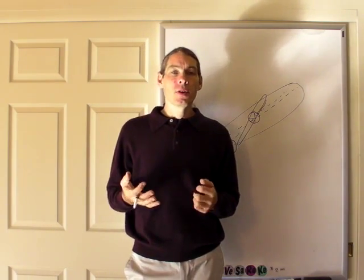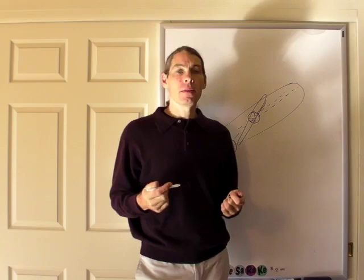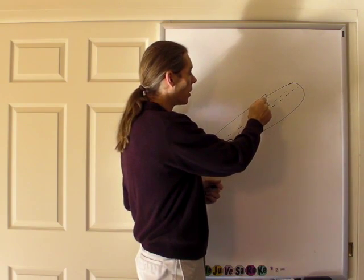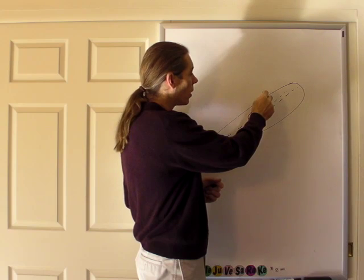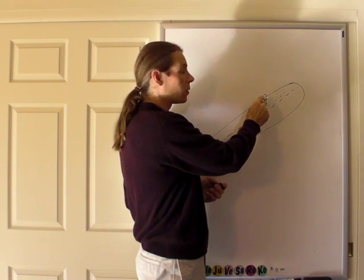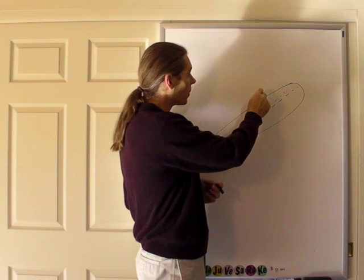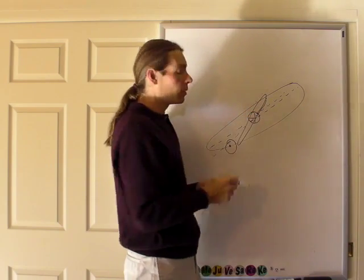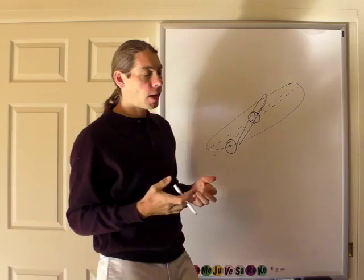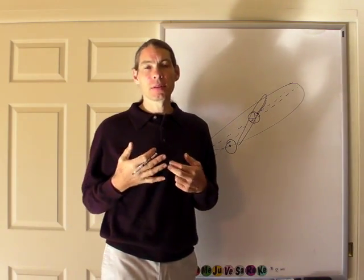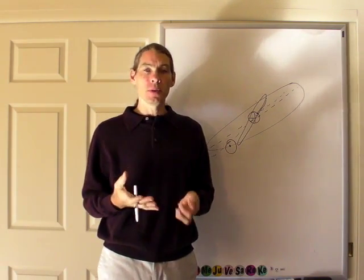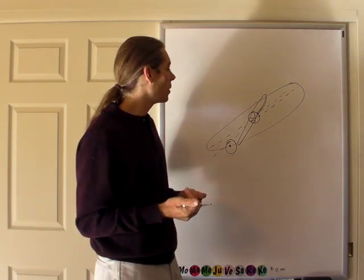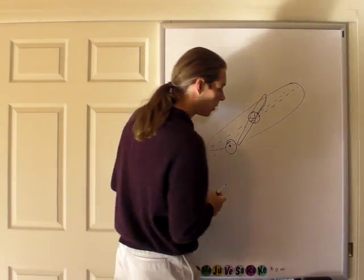Rahu and Ketu only exist twice a month. They exist when the Moon crosses the ecliptic as it goes north — that's the Rahu point — and they exist when the Moon crosses the ecliptic as it moves south, and that's the south node or Ketu.